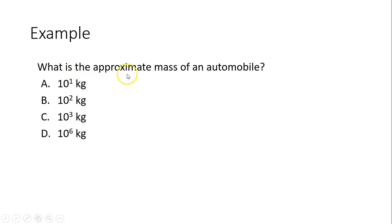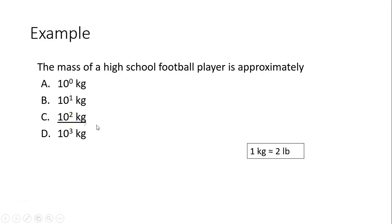What is the approximate mass of an automobile? We talked about automobile is about 2,000 pounds, so that's about 1,000 kilograms. The mass of a high school football player, 200 pounds because they usually tend to be a little bit heavier, so that's 100 kilograms.